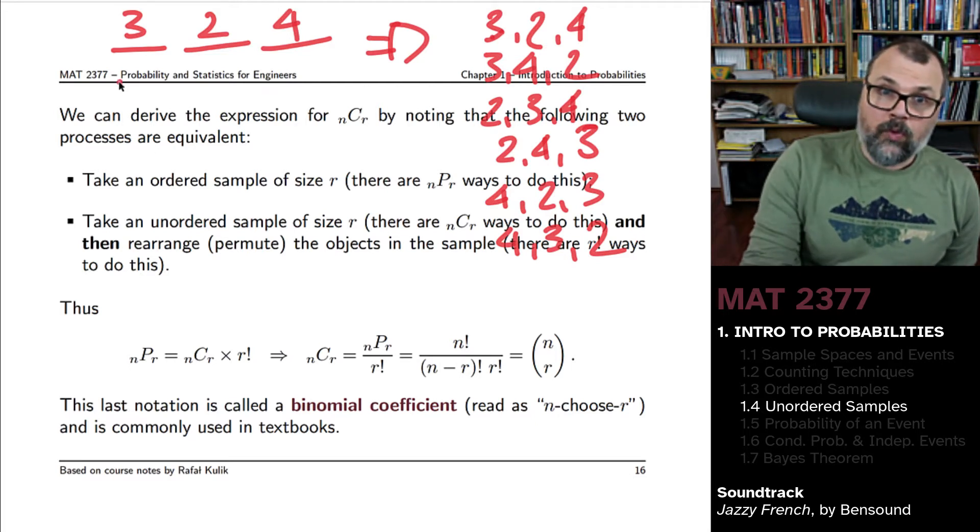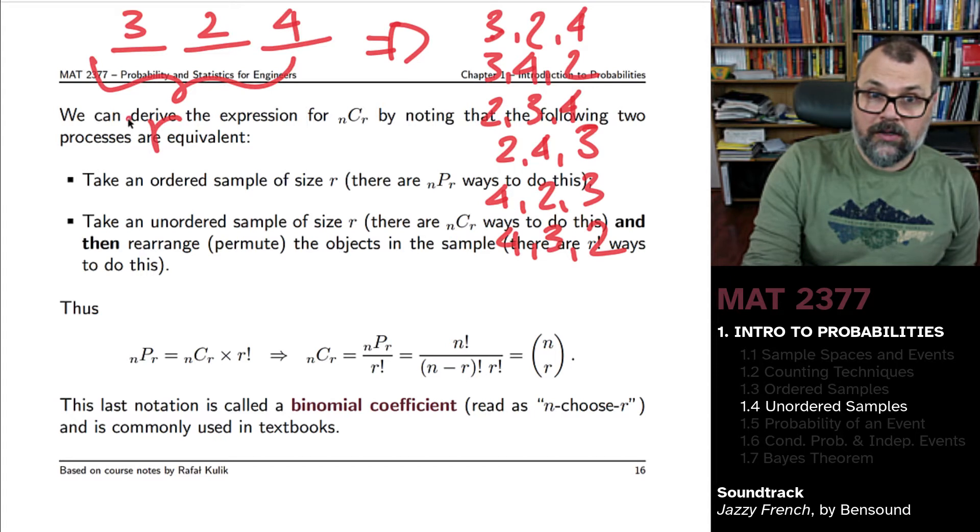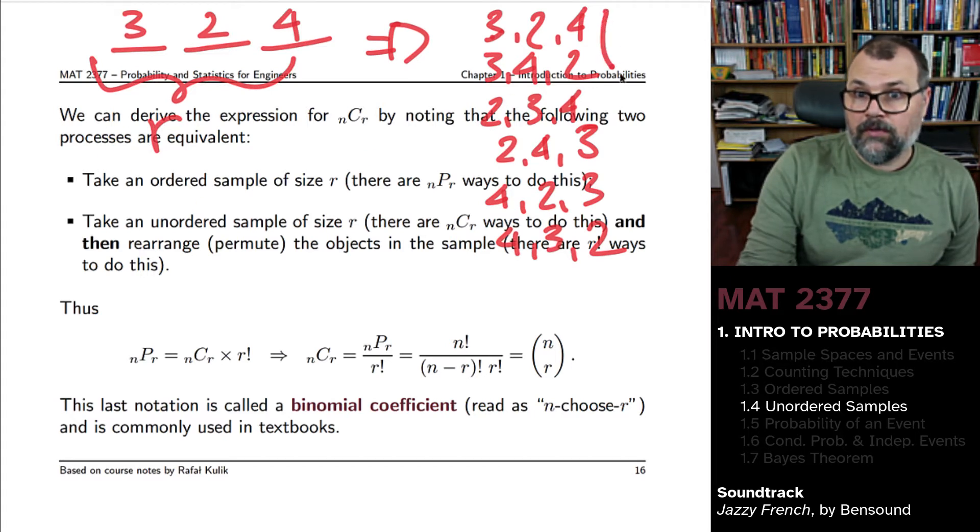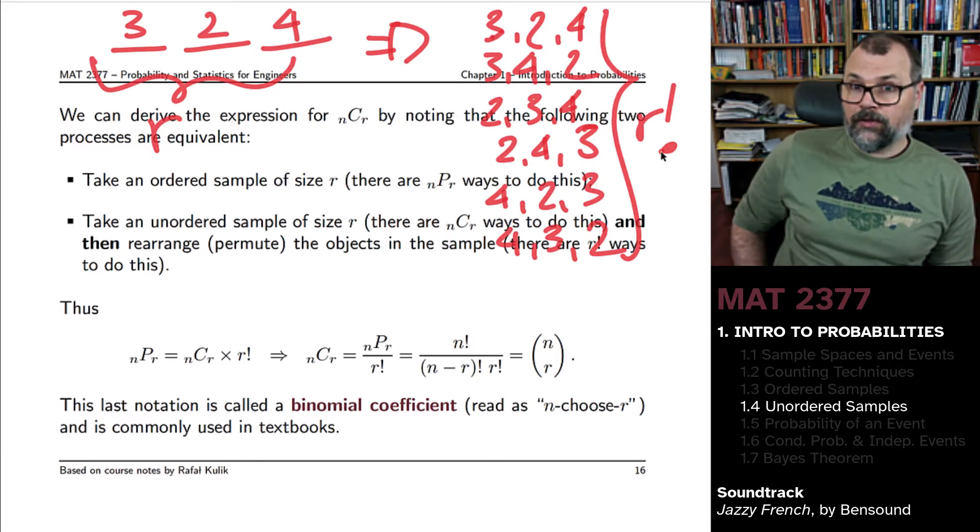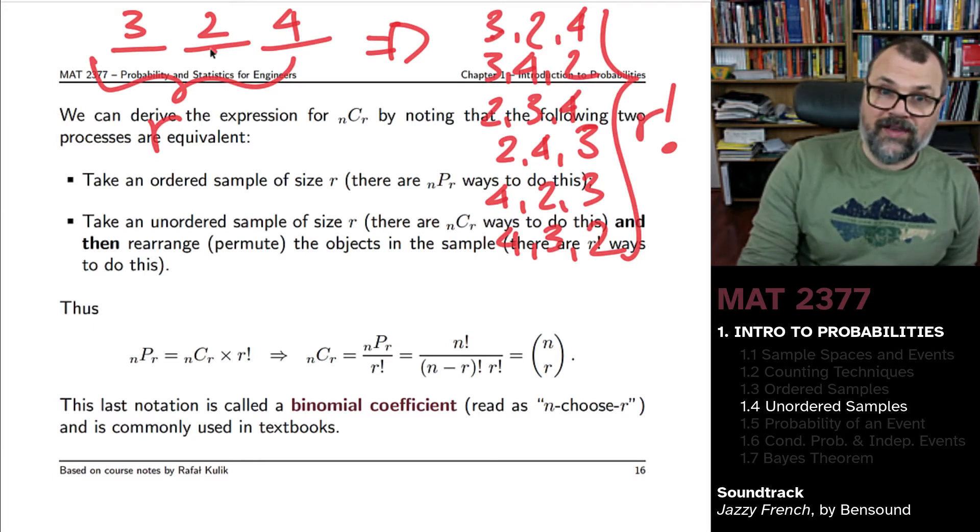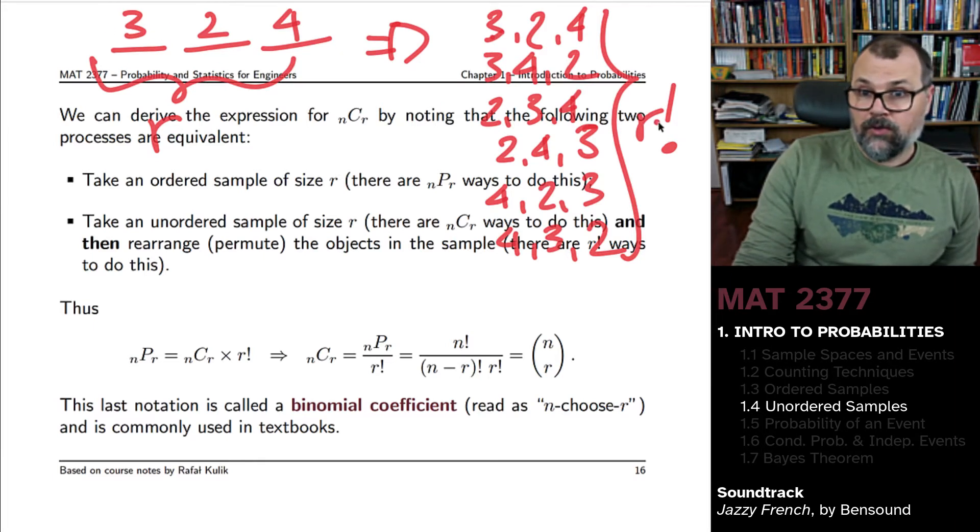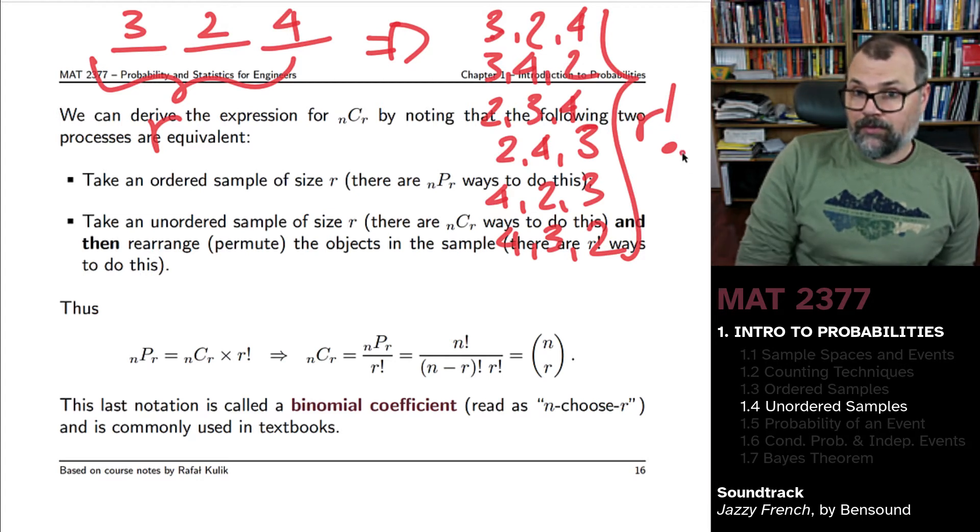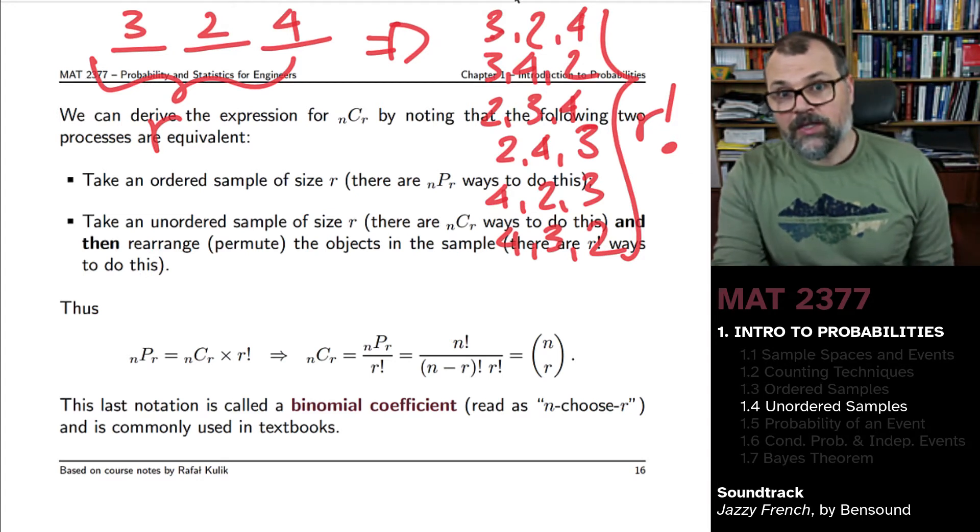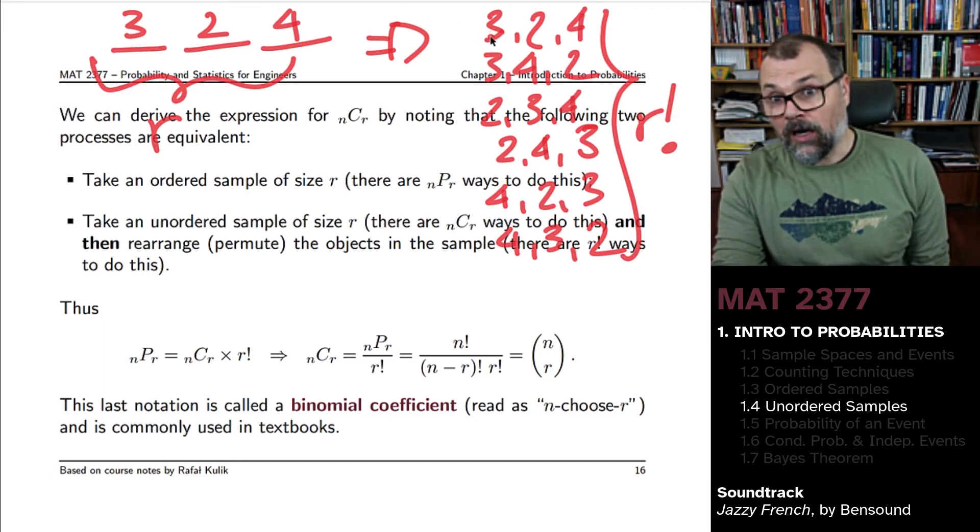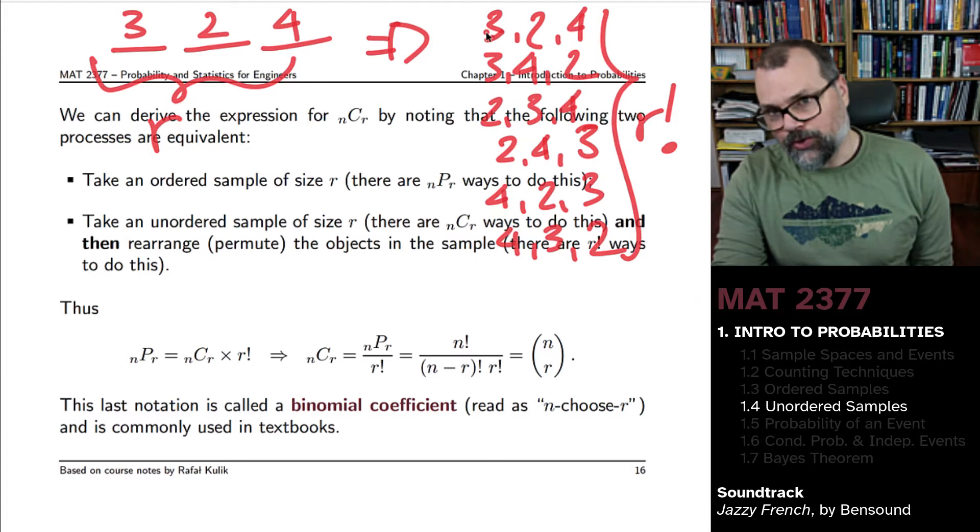So if you're working here with a sample of size r, the number of options will be r factorial. If you work with a sample of size 3, you will have 3 factorial options. Why 3 factorial? Well, look, there's one choice for the first entry.